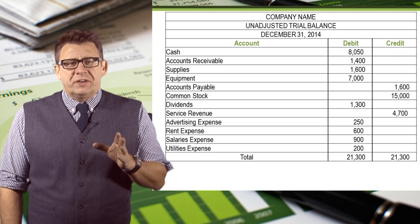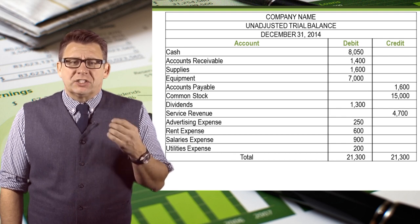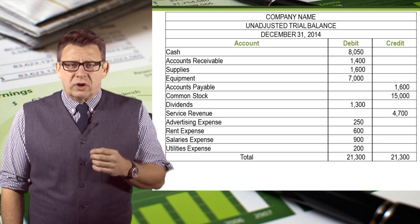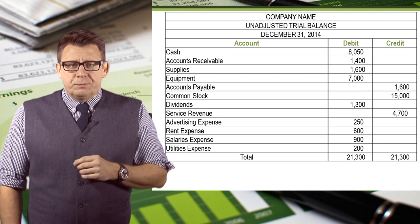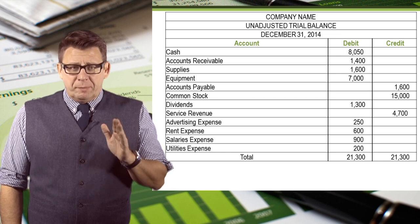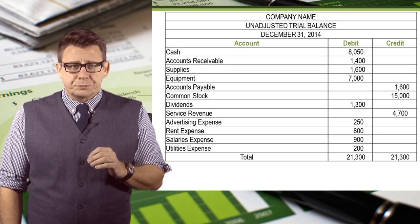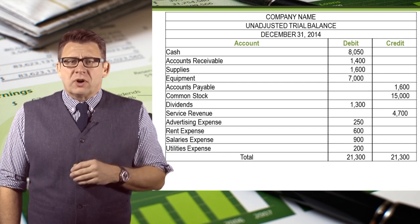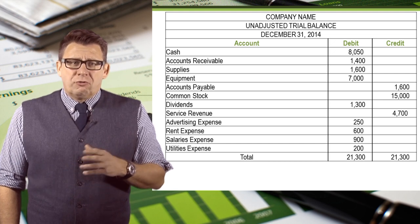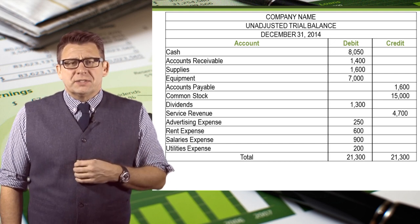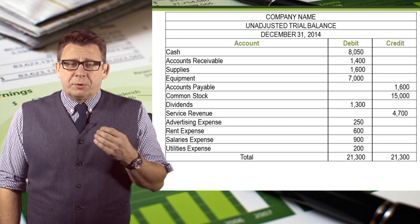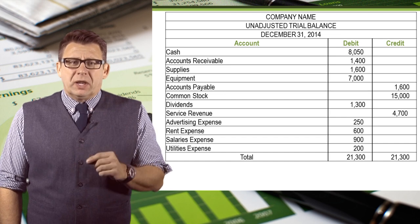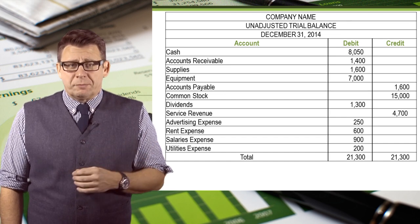So much of what we've covered in this video deals with the trial balance in general. I'd like to identify why this is an unadjusted trial balance. Specifically, other than telling us the balances of our ledger accounts at this time, and whether or not our debits equal our credits, the unadjusted trial balance doesn't tell us very much. For example, look at the supplies balance. That balance has likely come from the purchase of supplies during the month. However, it may not be the amount of supplies on hand at the end of the month, if we've used some of them.